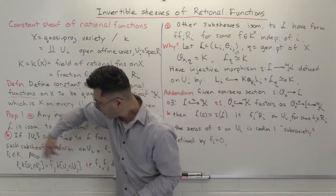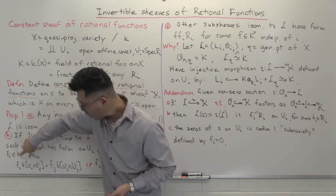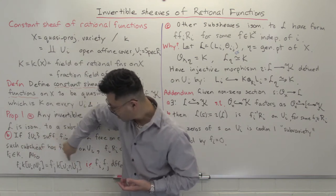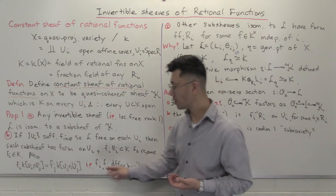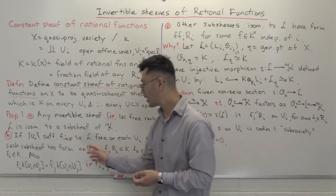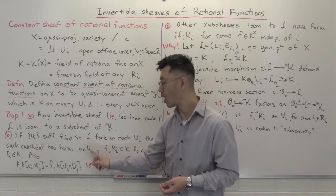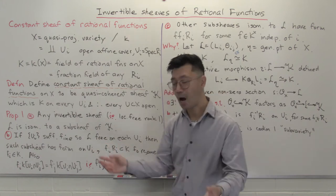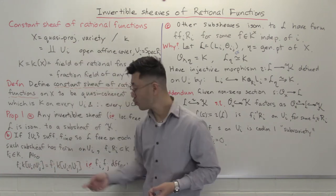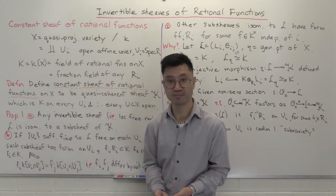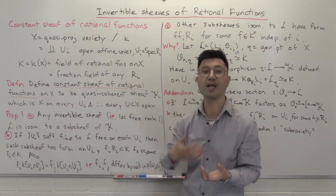You also have f_j times this ring from U_j, and these have to be equal — that's what it means to be a sub-sheaf. So you have equality of free rank one modules, which means f_i and f_j, when looked at as elements inside this ring, just differ by a unit. To describe this line bundle, all you need to do is give a bunch of rational functions f_i on this sufficiently fine open affine cover, and on the intersections they have to differ by a unit in the appropriate coordinate ring of the intersection.